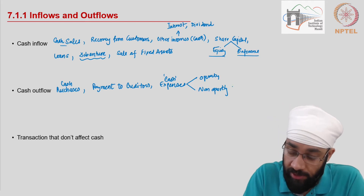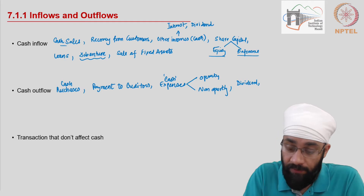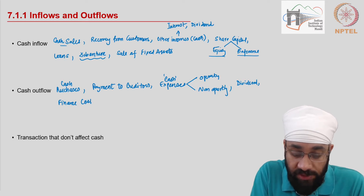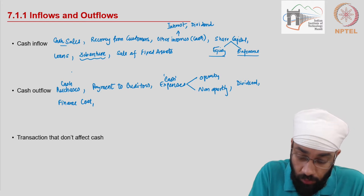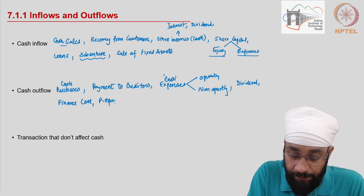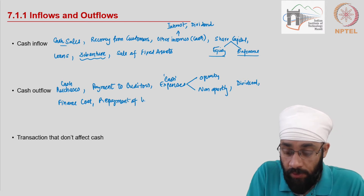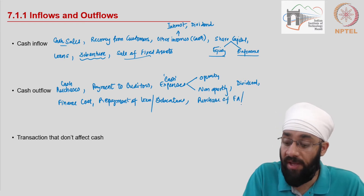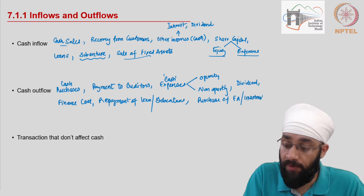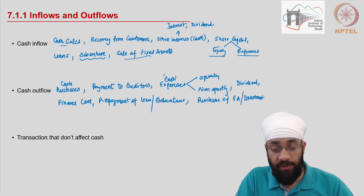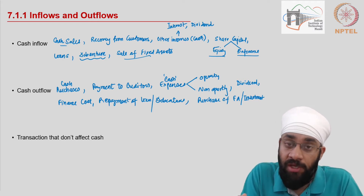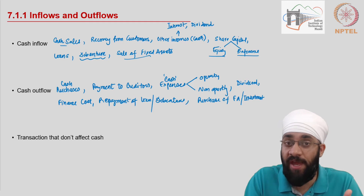In addition, we may pay dividend to shareholders. We can also pay interest on loans — finance costs — which includes all interest. Then you have repayment of loans or debentures. The opposite of sale of fixed assets is purchase of fixed assets or any other investment. Don't get confused — purchasing an asset is good for business, but in exchange, cash is going out of the business.